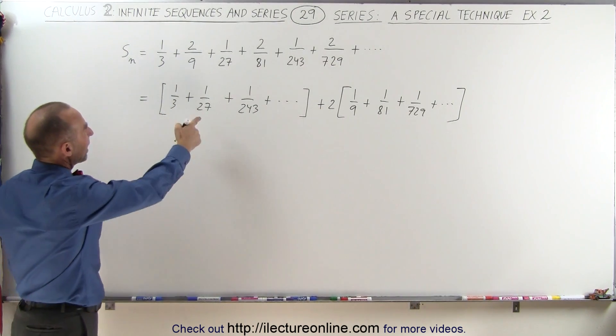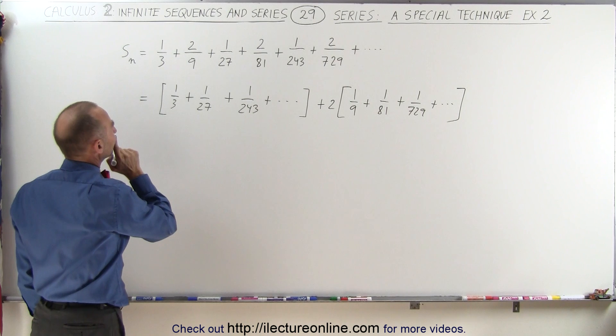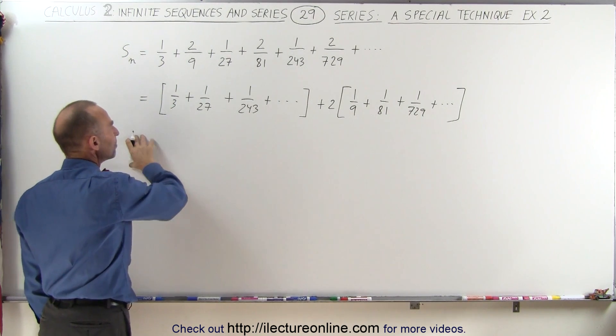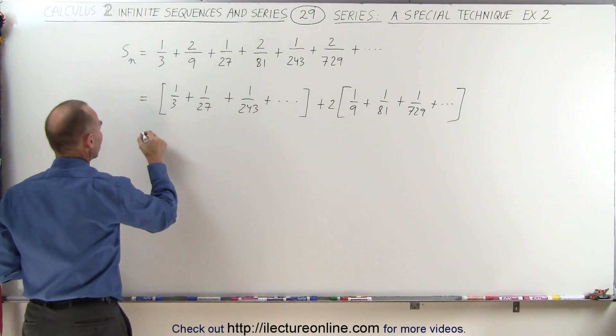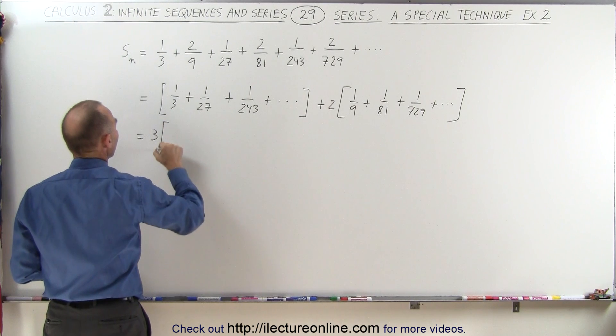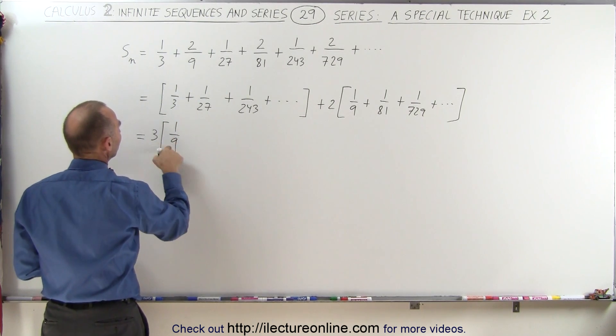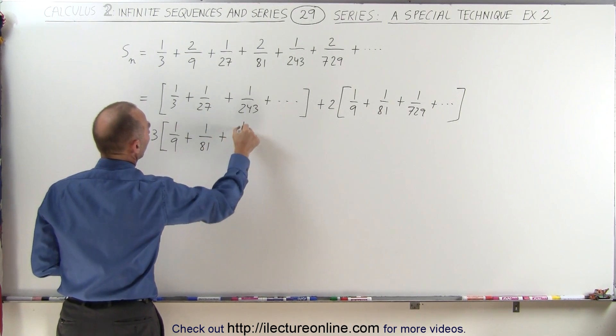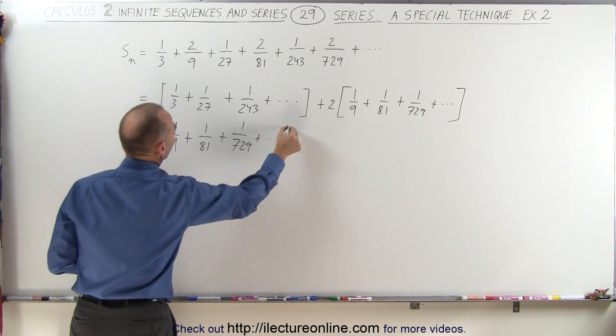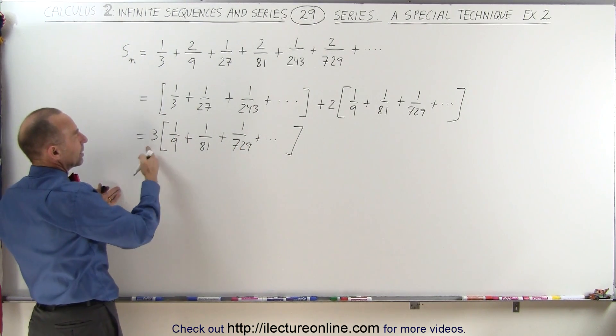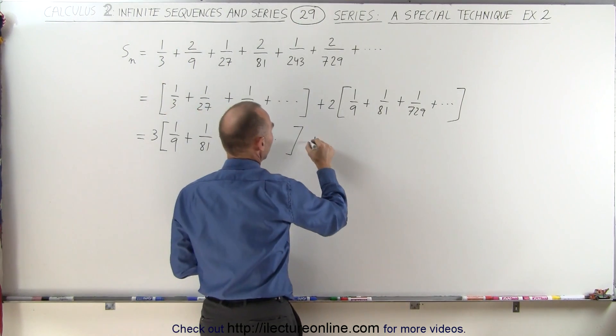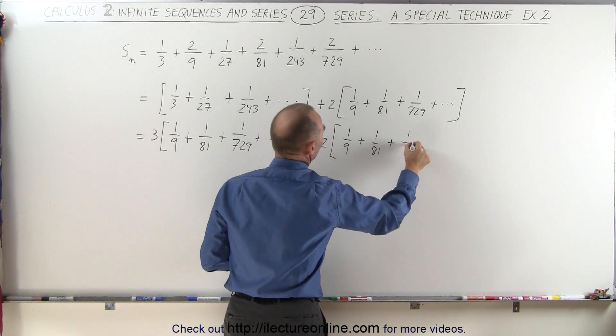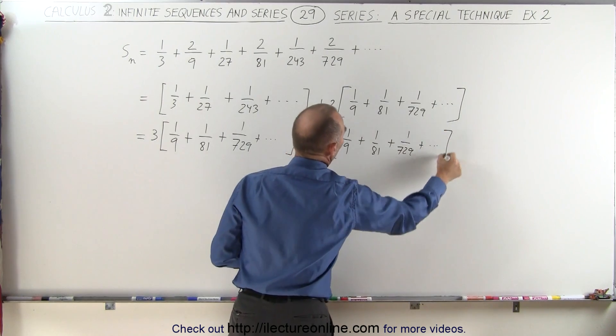Next what we're going to do is factor out a 3, or actually we're going to factor out a 3 and multiply everything by 3. So this is going to be 3 times (1/9 + 1/81 + 1/729 + and so forth), because when I multiply this out I get 1/3 again. So basically I did factor out a 3 and the denominators increased by a factor of 3, plus 2 times (1/9 + 1/81 + 1/729 + and so forth).